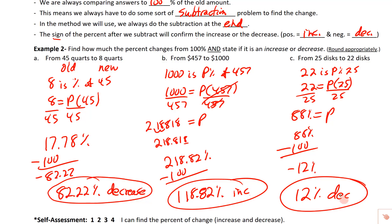We knew it was a decrease because it went down, just like part B was an increase because it went up. Notice: a positive answer means increase, a negative answer means decrease. Again, please don't write 'negative 12% decrease' — decrease already takes care of the negative. Go ahead and circle how you feel about this and good luck on the assignment.